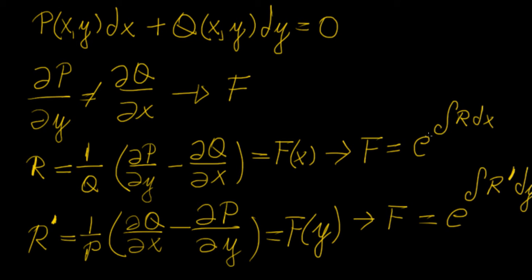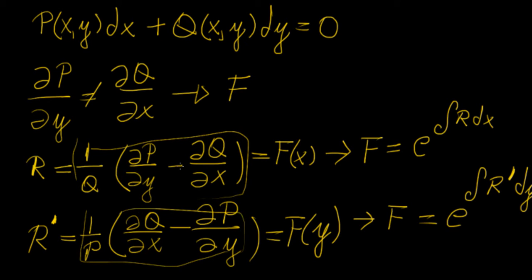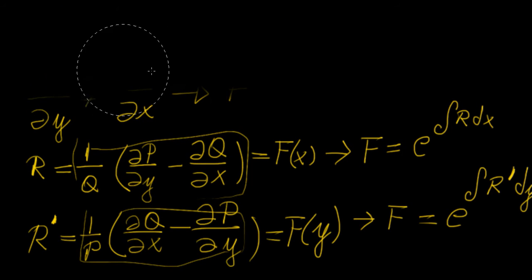I know what you're thinking — where does this come from? There's a full derivation which I might cover in a different video, but for now I want to illustrate what we do when this is the case and how we proceed to solve the differential equation. We need to test whether r or r' is reducible. Reducible means that once you solve the expression, you get a function solely of y if you're finding r', or a function solely of x if you're finding r.